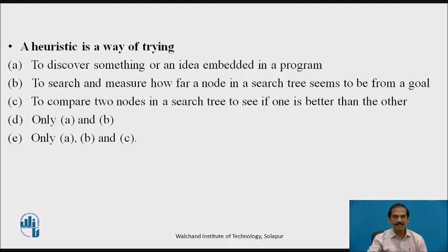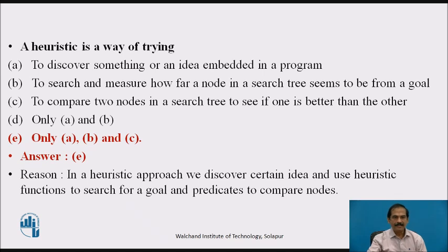The second MCQ is: a heuristic is a way of trying — A) to discover something or an idea embedded in a program, B) to search and measure how far a node in a search tree seems to be from a goal, C) to compare two nodes in a search tree and see if one is better than the other, D) only A and B, or E) only A, B, and C. The answer is E — only A, B, and C — because in the heuristic approach we discover certain ideas and use the heuristic function to search for a goal and predicates to compare the nodes in our graph.